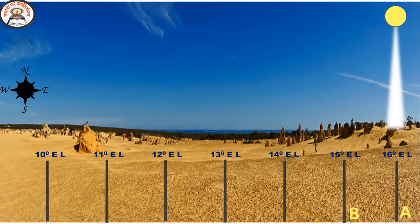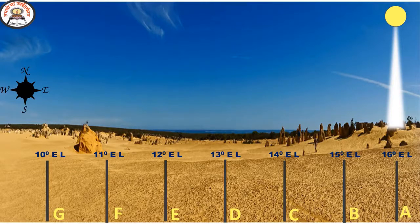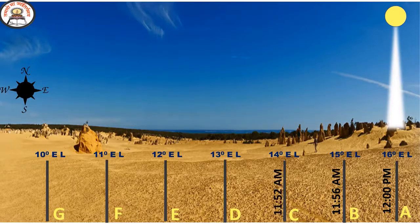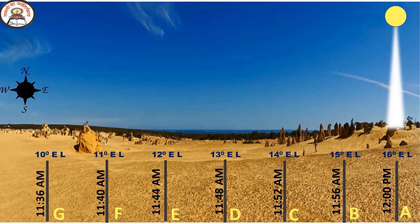Suppose A, B, C, D, E, F, and G are different places on a very large area, apart by one degree longitude each, as shown in the image. We know there is a time difference of 4 minutes between two longitudes. When the sun shines overhead of A, the time there is 12 noon. What is the time in place B? It is 4 minutes to 12, or 11:56 AM. The time in C is 8 minutes to 12, or 11:52 AM. These are called local times.